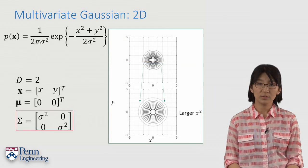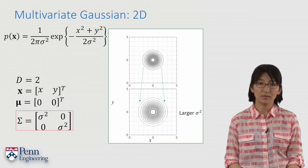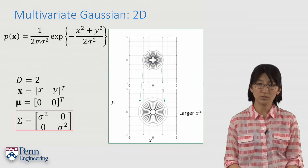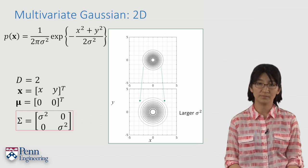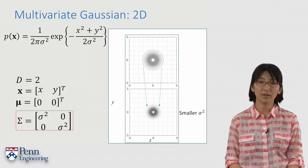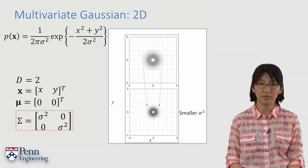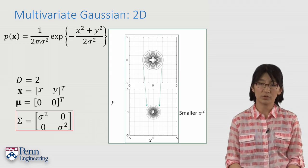Again, similar to the 1D case, as the variance terms increase, the distribution spreads out with smaller peak value of p. The distribution tightens with large peak value of p as the variance terms decrease.